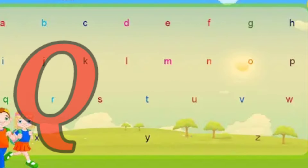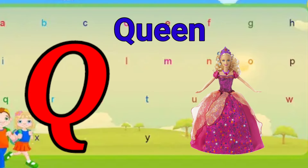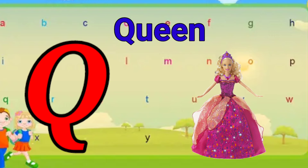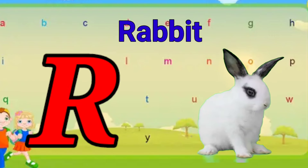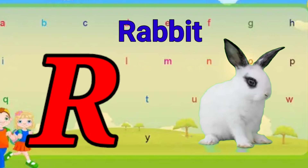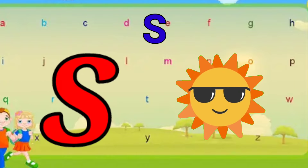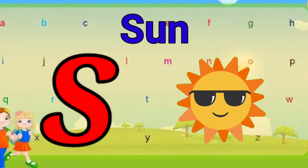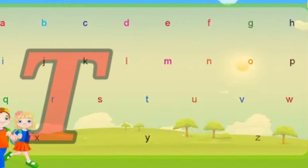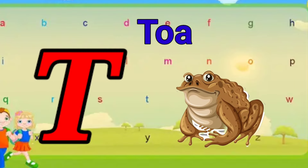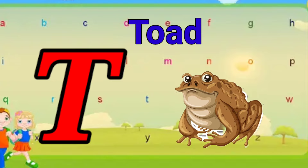Q is for queen, q-q-queen. R is for rabbit, r-r-rabbit. S is for sun, s-s-sun. T is for toad, t-t-toad.